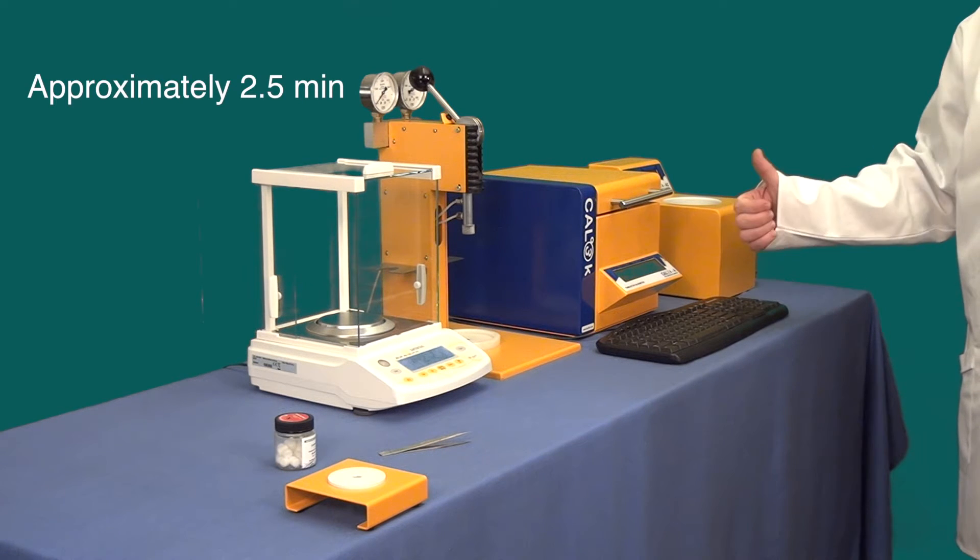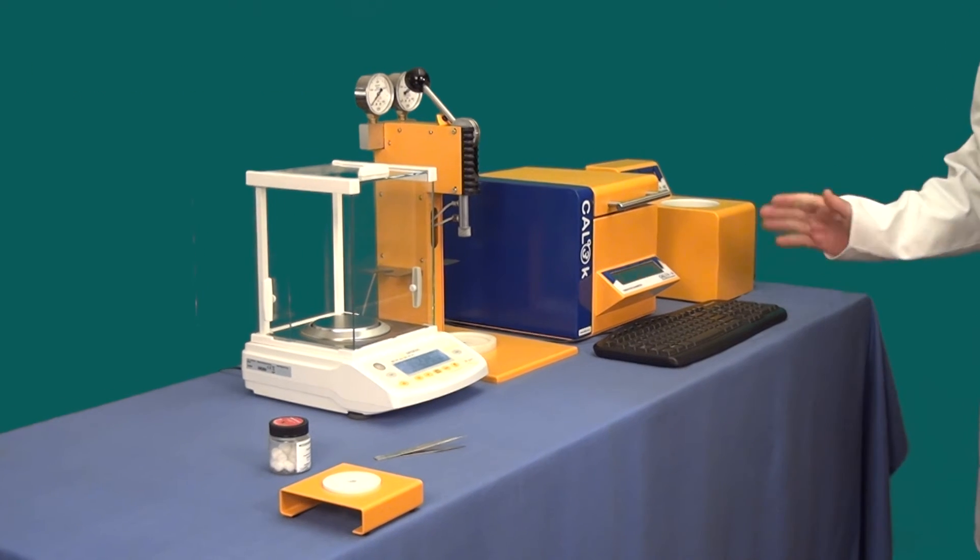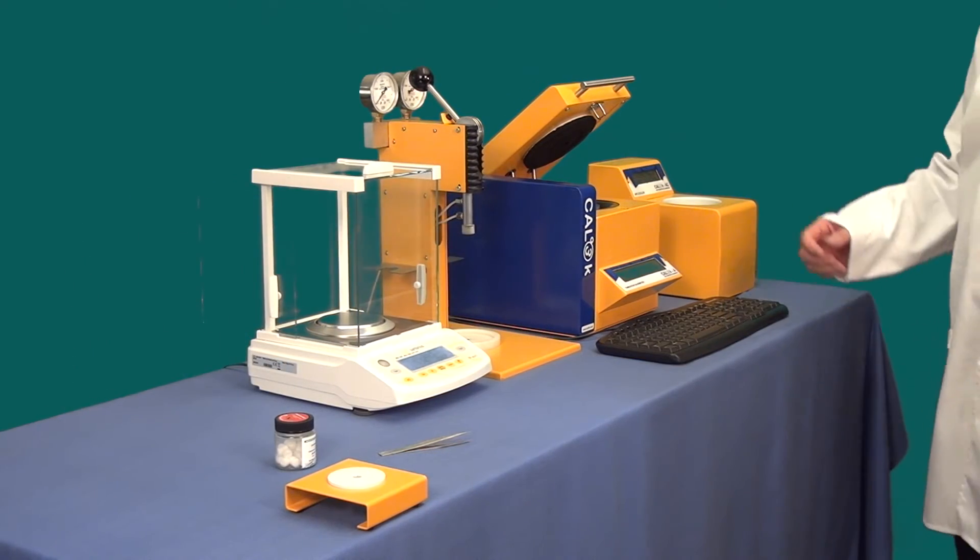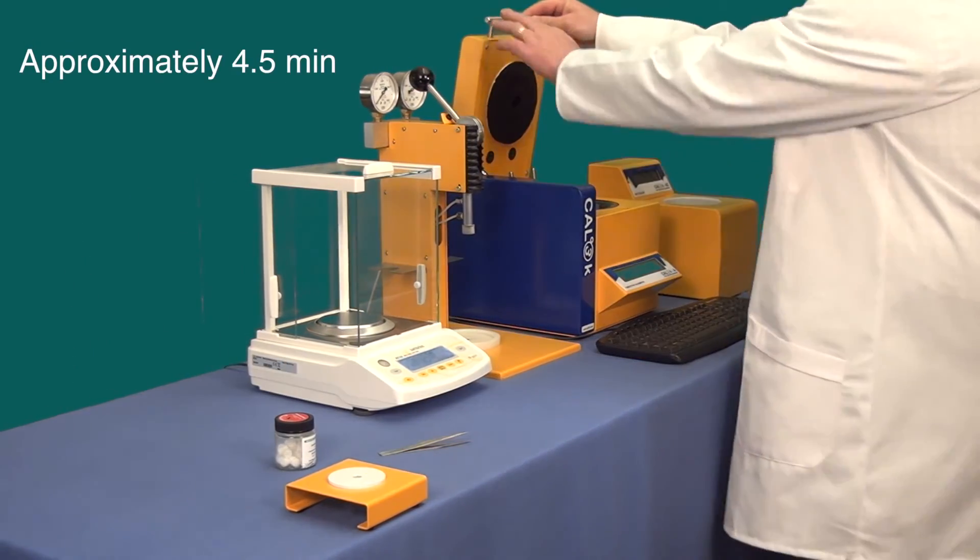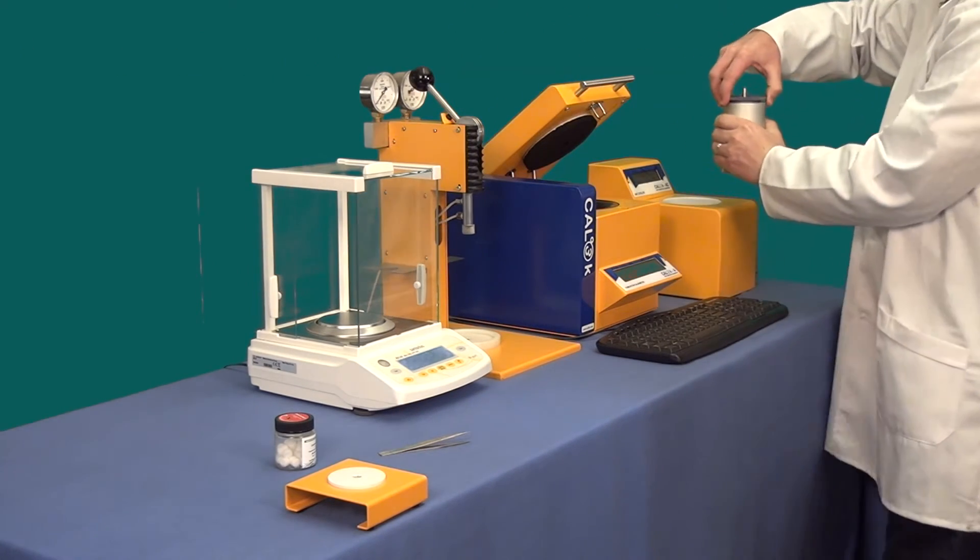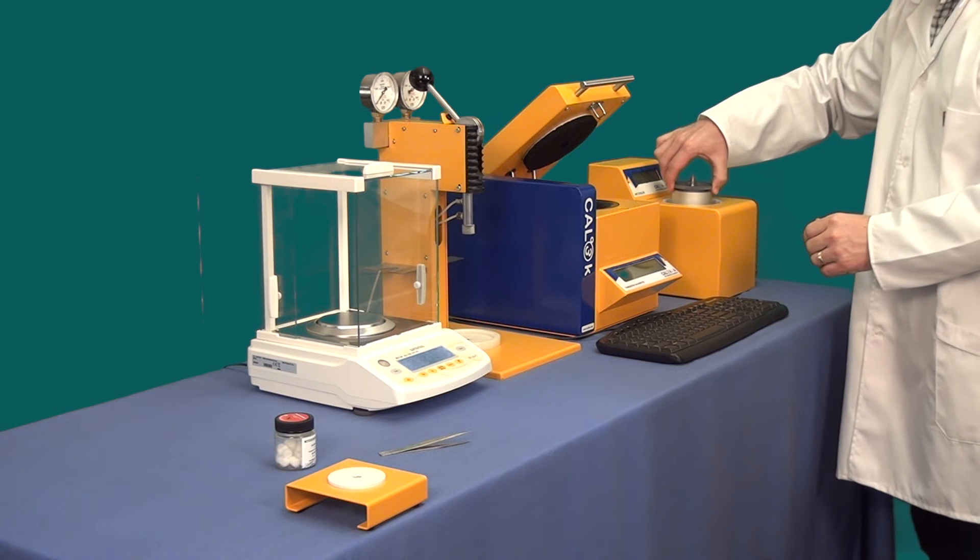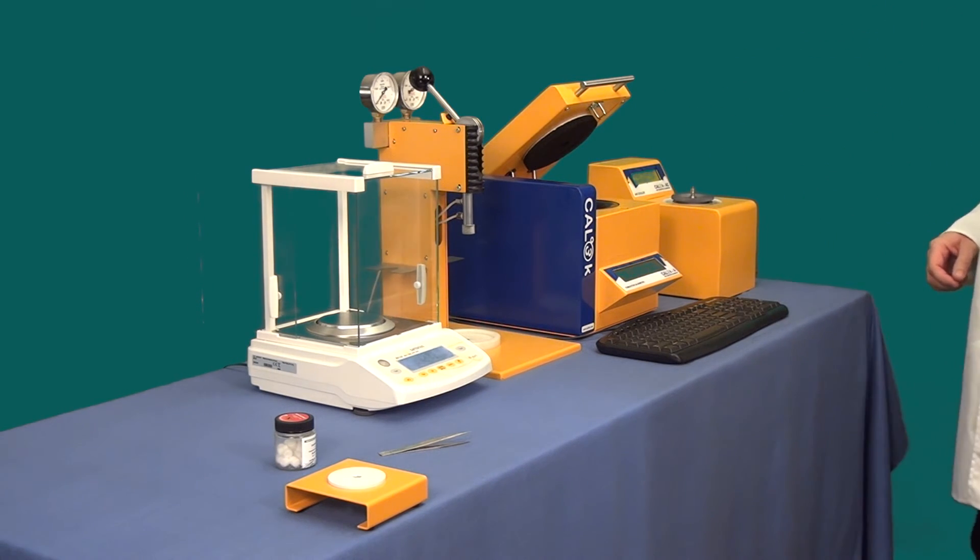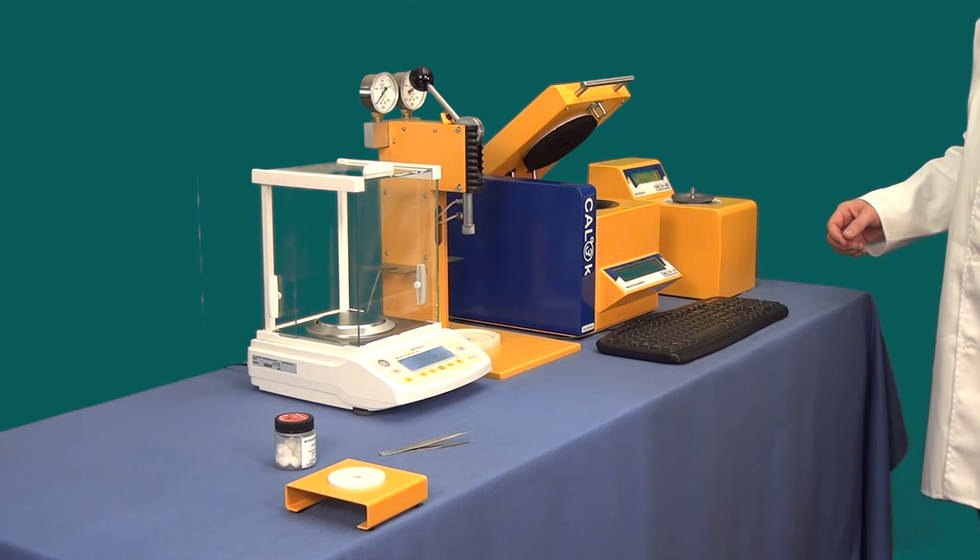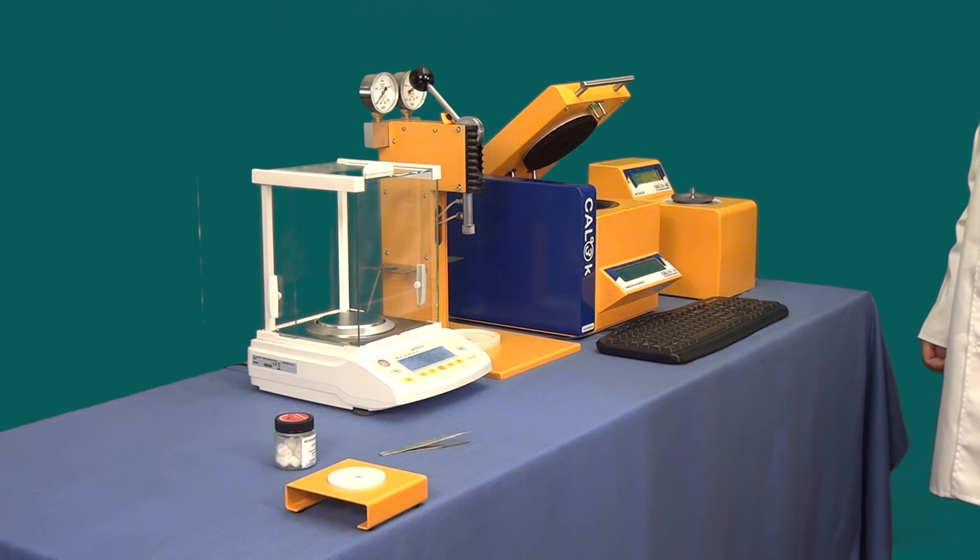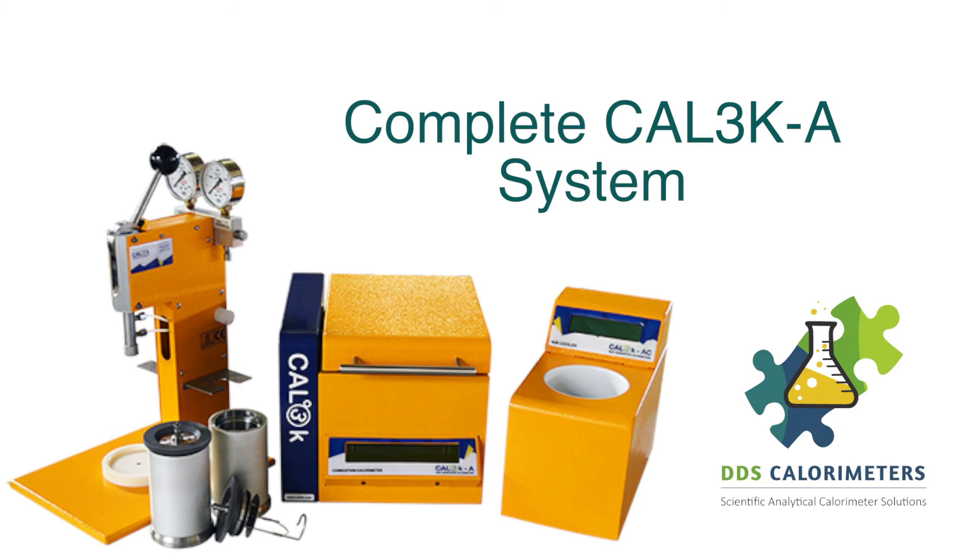Now the calorimeter has fired and we need to wait another two minutes for the determination to finish. Once finished, the lid will automatically open allowing you to remove the warm bomb vessel. The bomb vessel is approximately 14 degrees warmer than ambient at this point. Place the bomb into the cooler and the cooler will now proceed to cool the bomb vessel down. The cooler will also indicate the time required till the bomb can be used again. That's it.